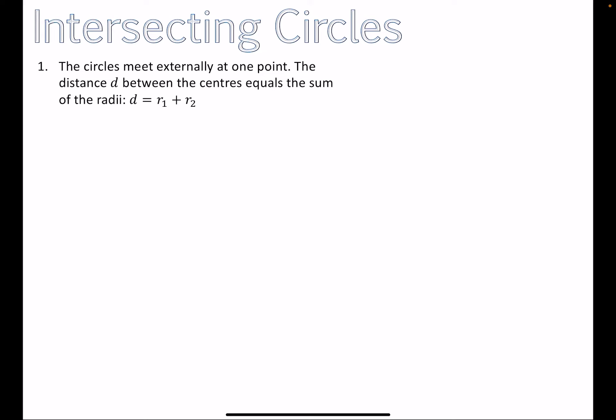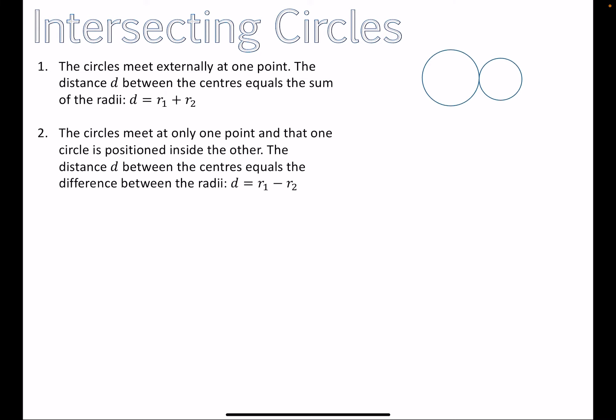The first possibility: the circles meet externally at exactly one point — similar to tangency but between two circles. This occurs when the distance d between the centers equals the sum of the two radii. If you work out the distance between the centers and it exactly matches the sum of the radii, the circles will touch at precisely one external point.